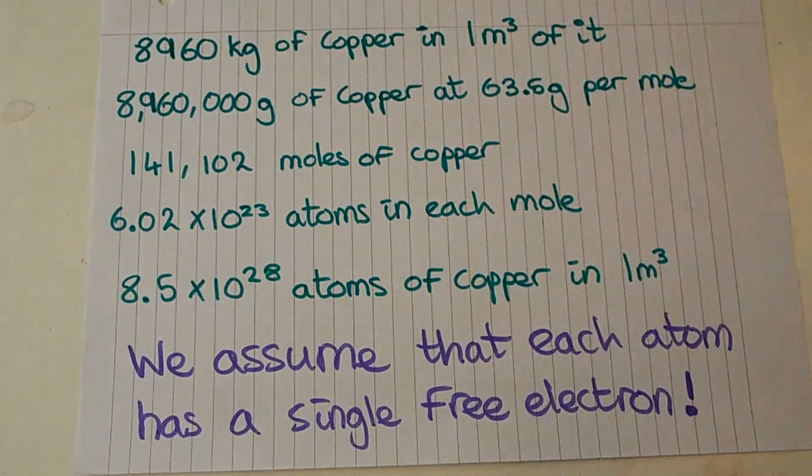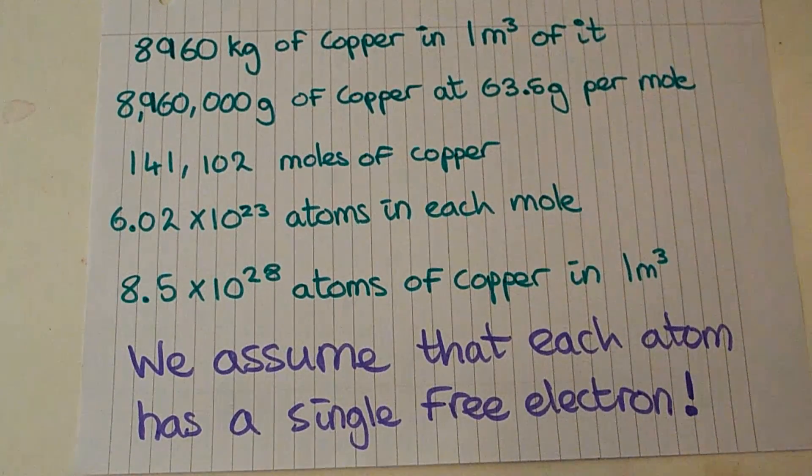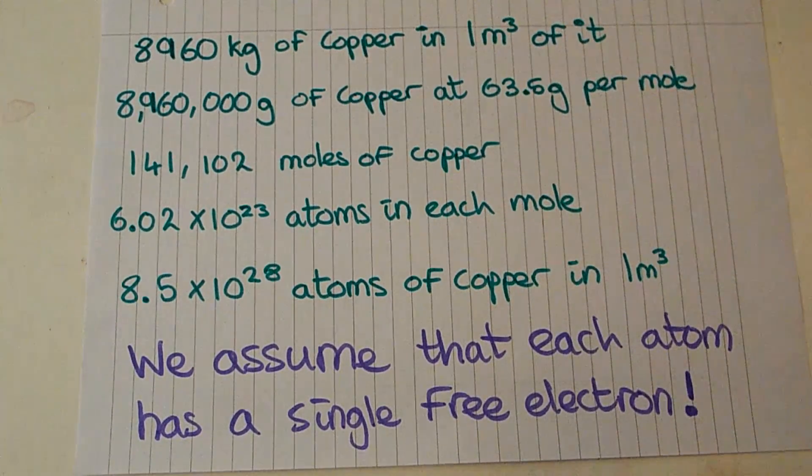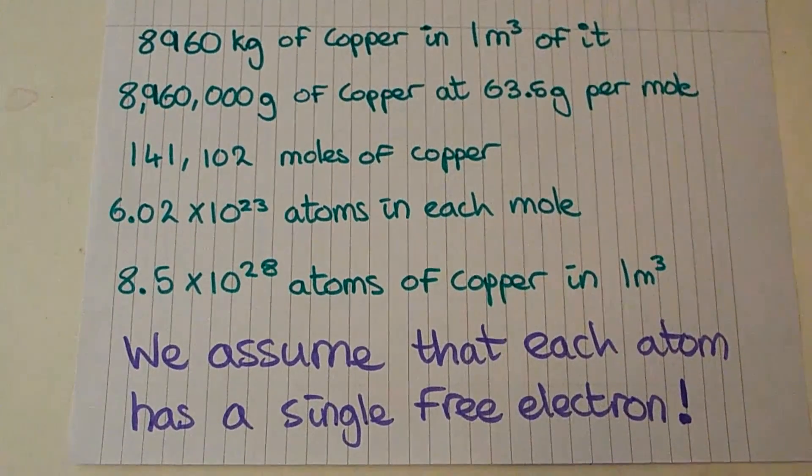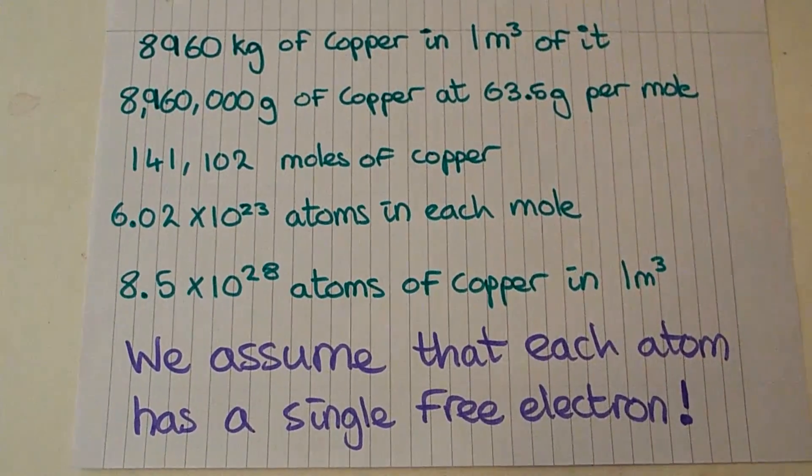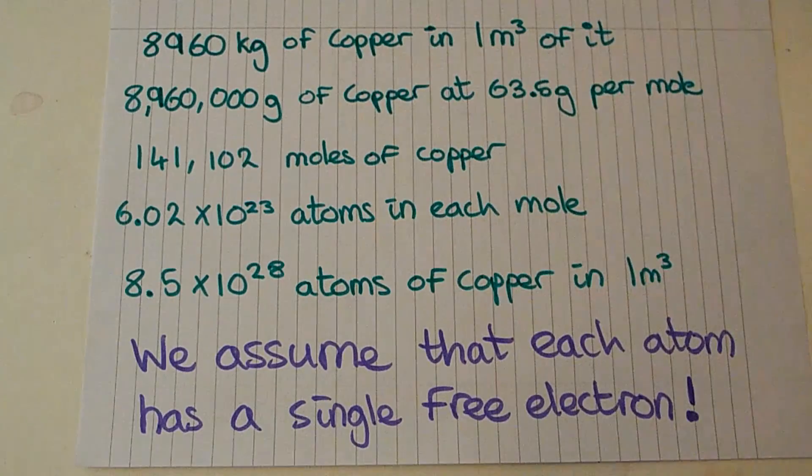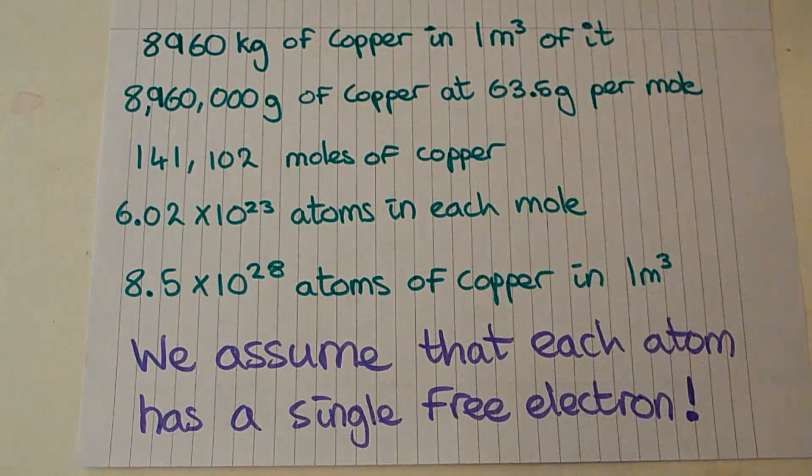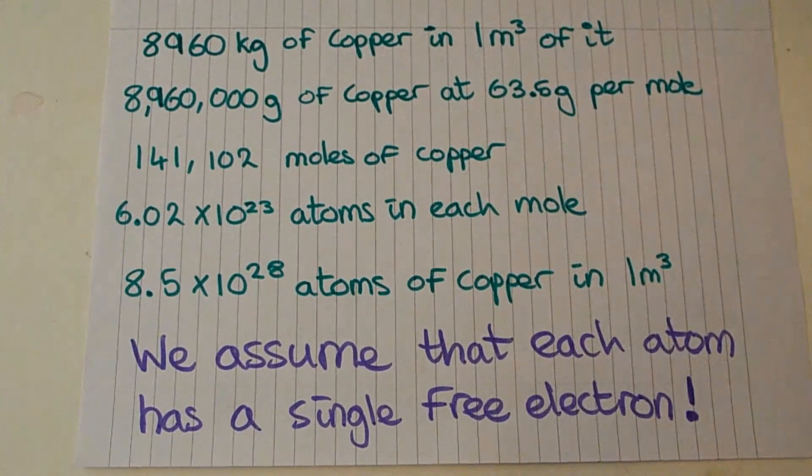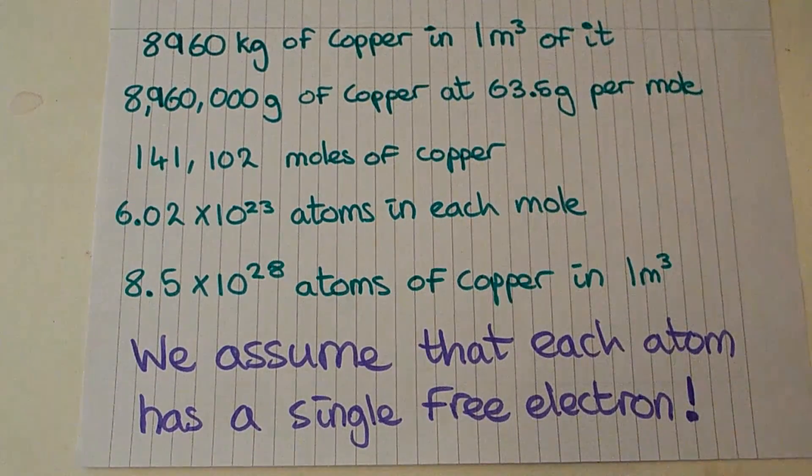What we do when we do this is we're going to assume that each atom only has a single free electron. Obviously this is quite a broad assumption and it's very unlikely, but if we just sort of average it out in most circumstances that's the best thing we can do for an estimate. So that shows us that we've got 8.5 times 10 to the 28 electrons per meter cubed of copper, so that's its electron density.